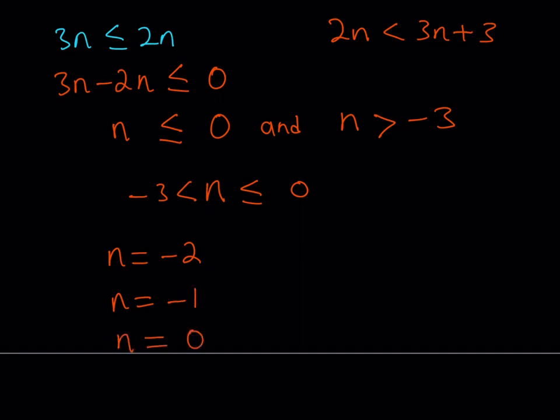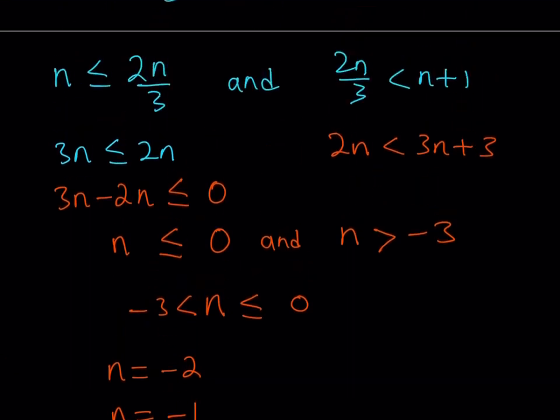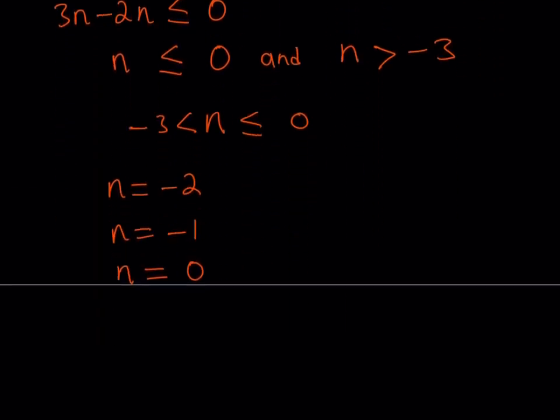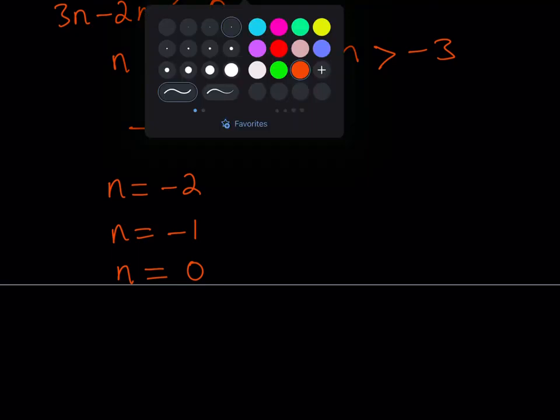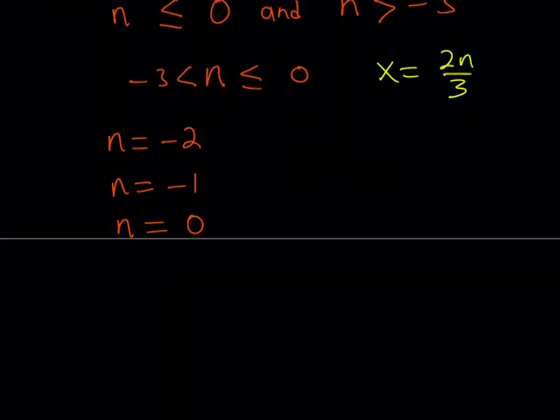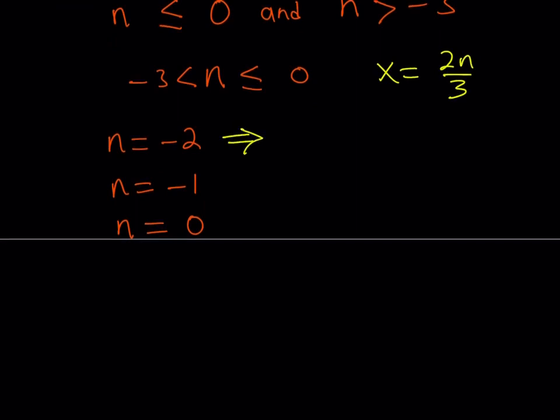Well, interesting. So we only found 3 n values because n is an integer. Now, this is going to take us to the x values because remember we said that x is equal to 2n over 3. So by using that, we can basically find the x values. Let's go ahead and find them. So if n is equal to negative 2, then x is going to be negative 4 thirds. If n is equal to negative 1, x is going to be negative 2 thirds. And if n is equal to 0, x is going to be 0.